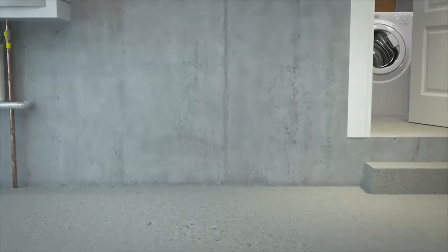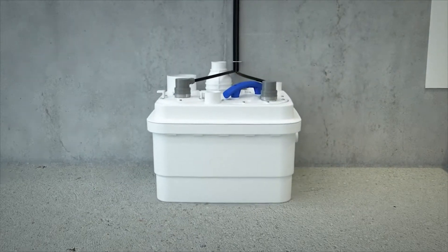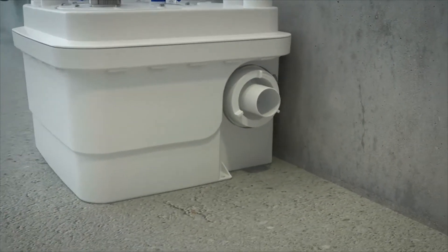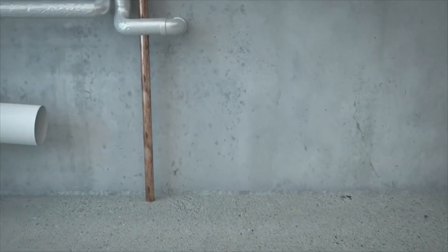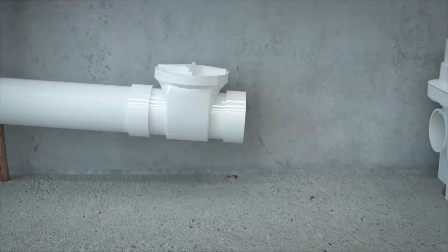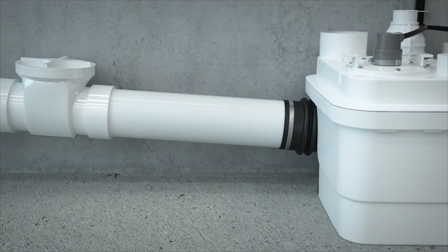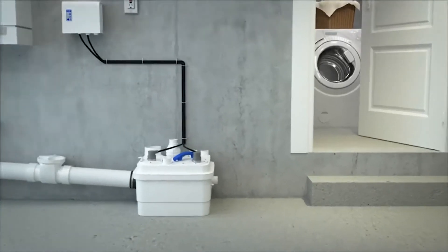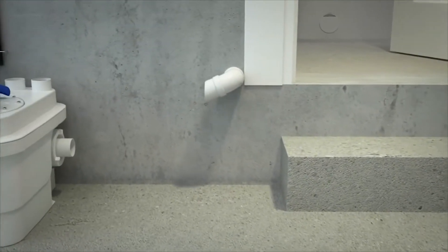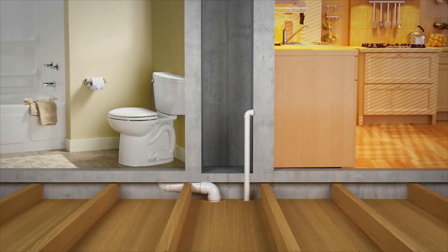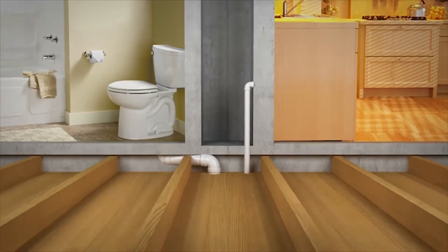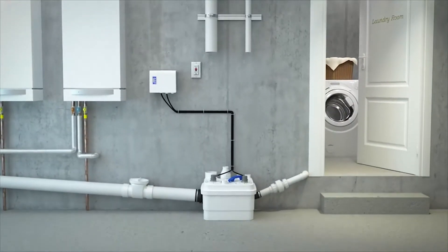Allow us to show you how easy it is to install a Sanicubic One. Secure the Sanicubic One to the floor. Connect your drain pipes through one or both of the side inlets on the pump. Install the appropriate isolating valves. Use the rubber couplings and clamps provided to make these connections. Fixtures from upper floors can all be drained into the pump through the top inlets of the enclosure.